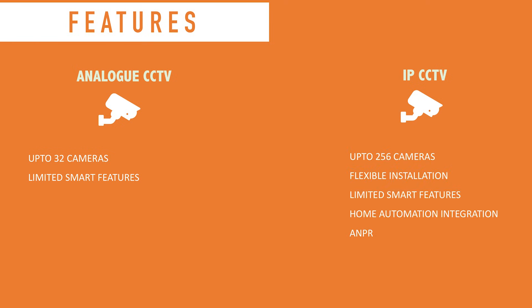IP CCTV is a lot more scalable. We're going to show you a diagram in a bit to show what that looks like in a physical installation. A single network video recorder can go up to 256 cameras.